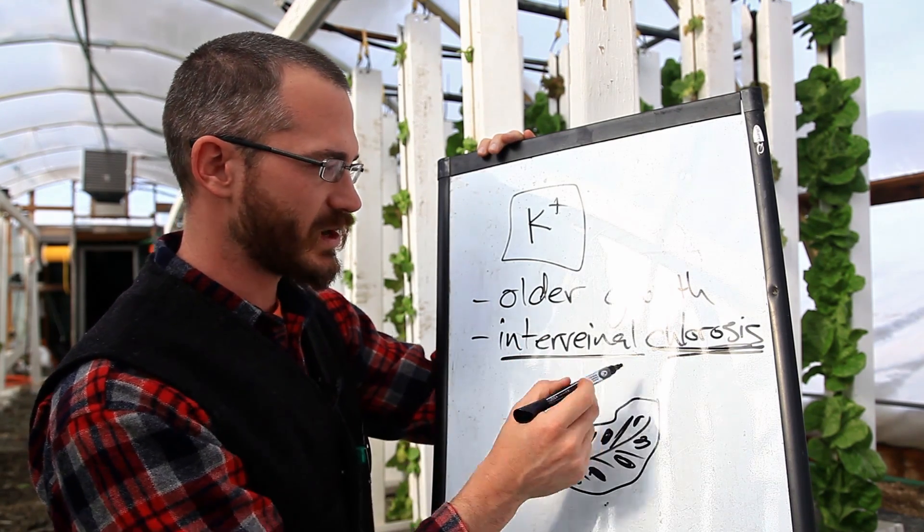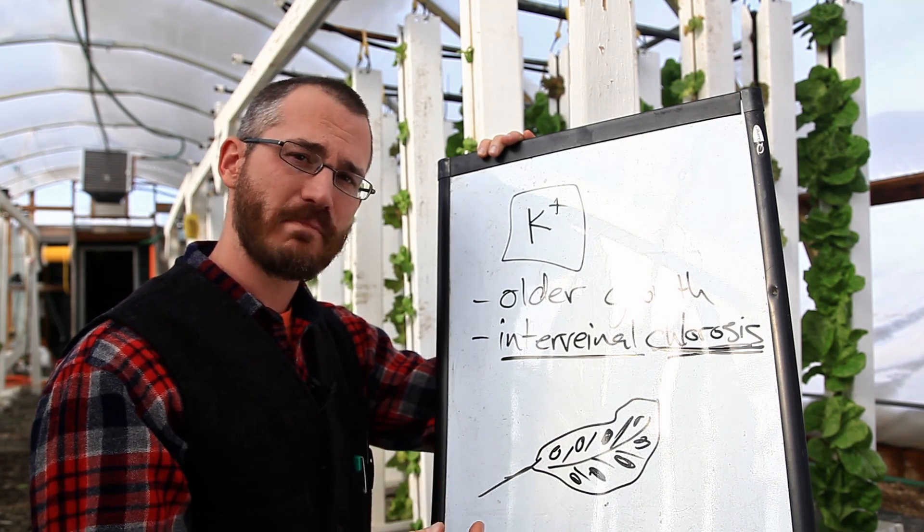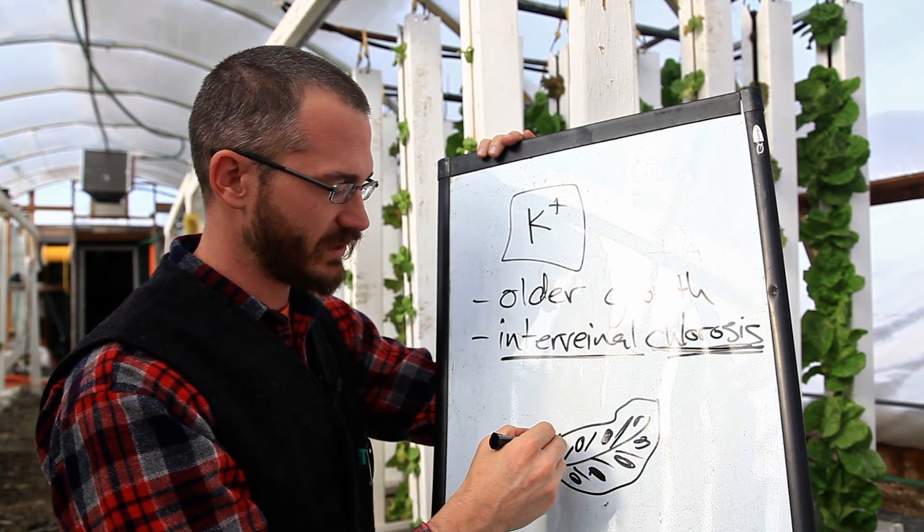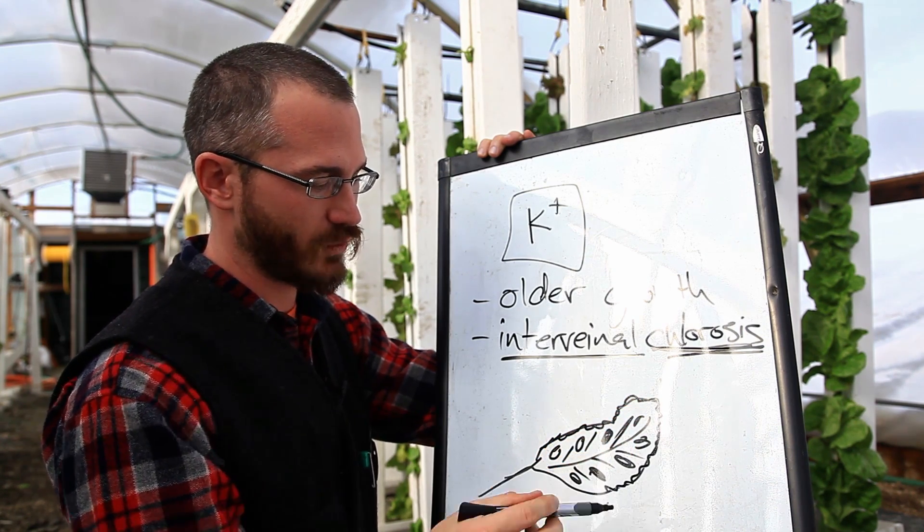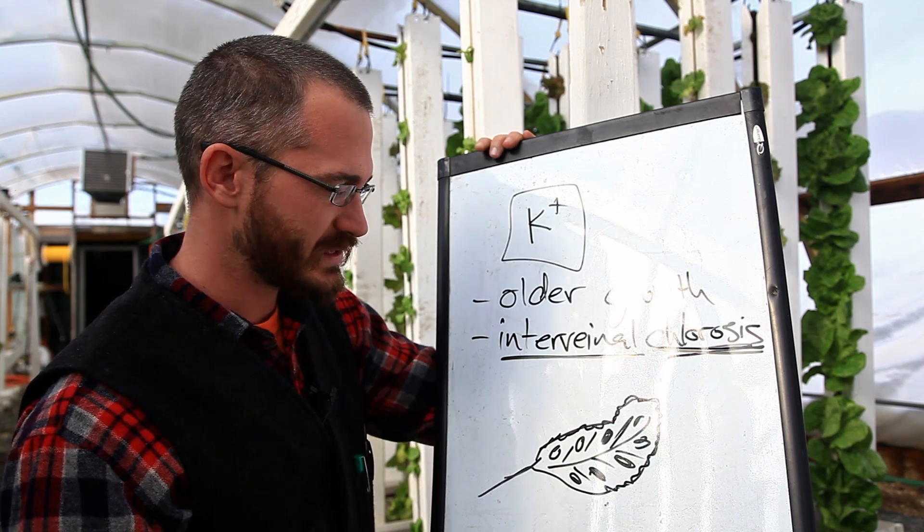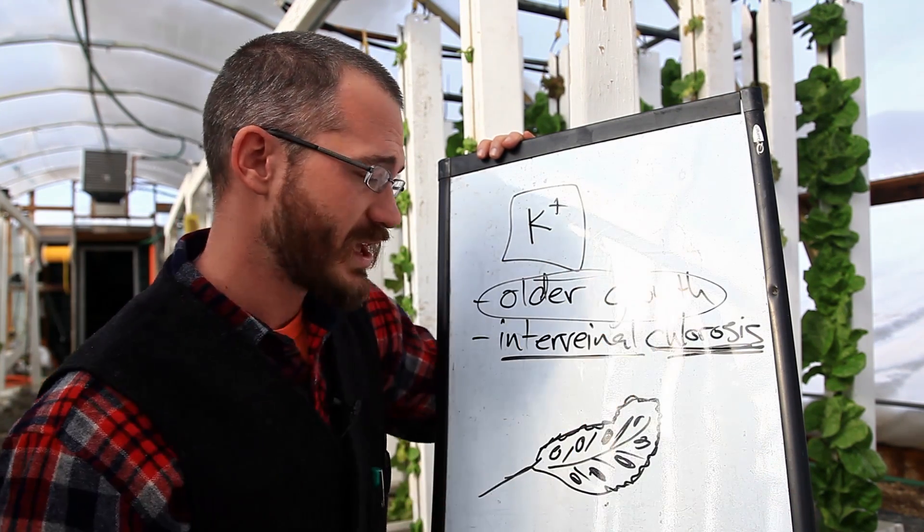So that's an important thing to understand. It's older growth, it's interveinal chlorosis. And oftentimes we see necrosis or death of the tissues along the fringe of the leaf. So the fringes of the leaves will oftentimes burn and dry out. And this will be concentrated again in some of our older growth.